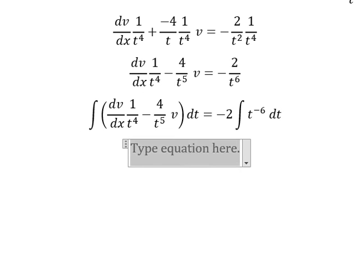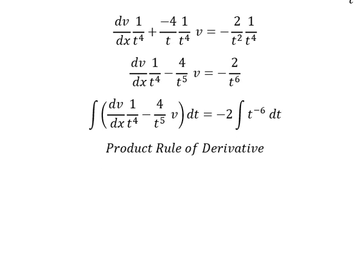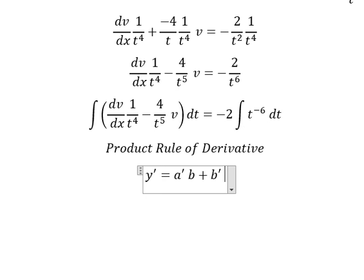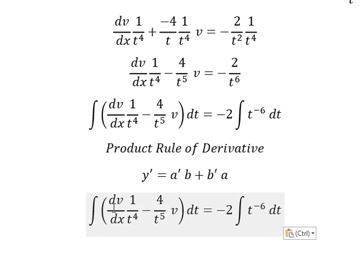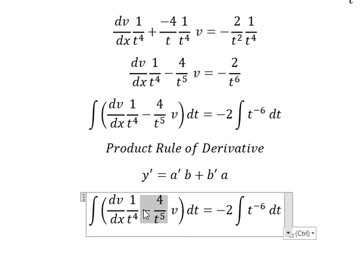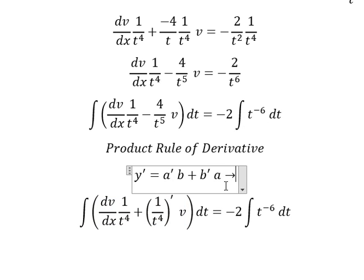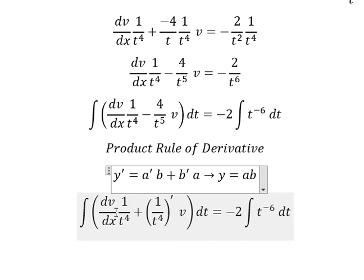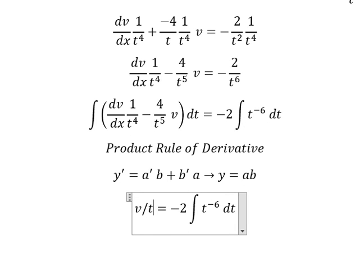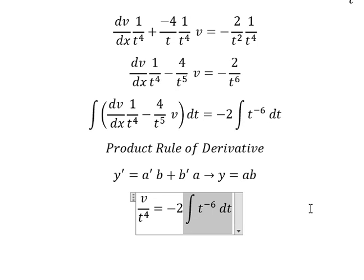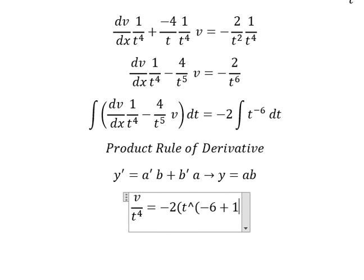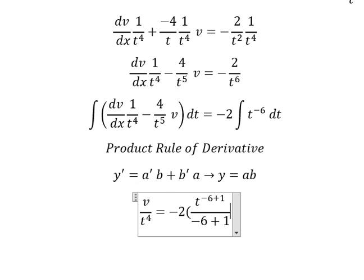Next we can use the product rule of the derivative. So we have the first derivative of (a·b) equals the first derivative of a multiplied by b, plus the first derivative of b multiplied by a. We look carefully — this is the first derivative of a times b, and this is the first derivative of b times a. So the integration of this gives us v over t to the power of 4. This one we have t to the power of negative 6 plus 1, over negative 6 plus 1, plus C.